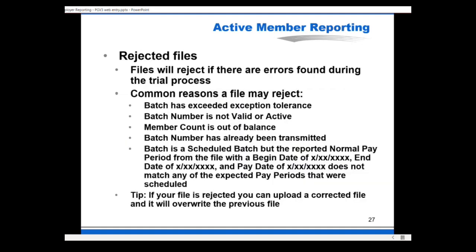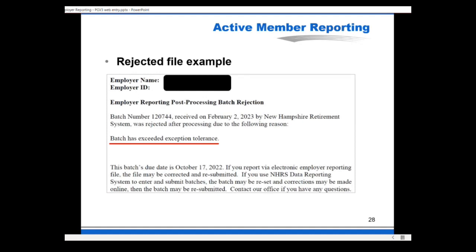If you receive a notification that your file has rejected, it means errors were found during file processing or file edits. There are many reasons a file might reject, and some common reasons are listed on the slide. If your file rejects, you can overwrite it by uploading a new file. One example of a rejection is the exceeded threshold tolerance, which means 35% or more of the file contained exceptions — when that large a percentage has exceptions, it usually means there's a systemic problem.